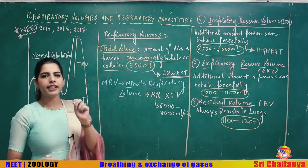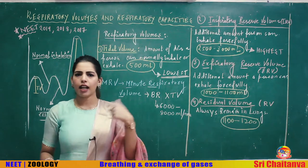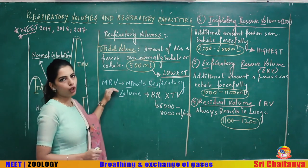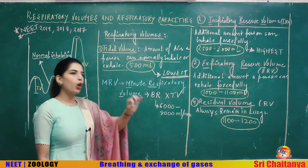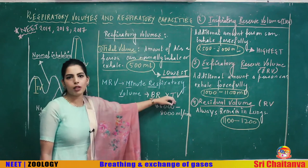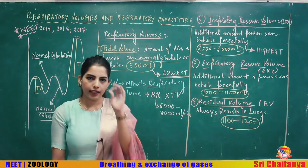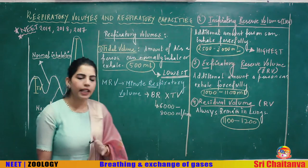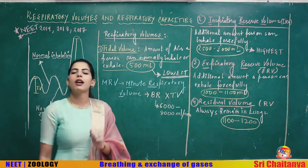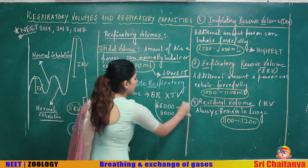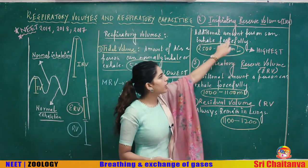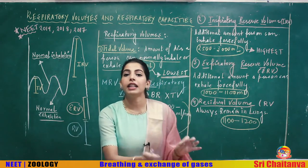In NCERT, a value of 6000–8000 ml per minute is given — this is the Minute Respiratory Volume (MRV). MRV = Tidal Volume × Breathing Rate. With a breathing rate of 12–16 times per minute and a tidal volume of 500 ml, MRV comes to approximately 6000–8000 ml.